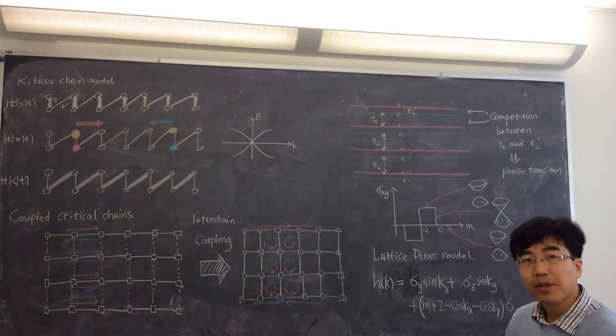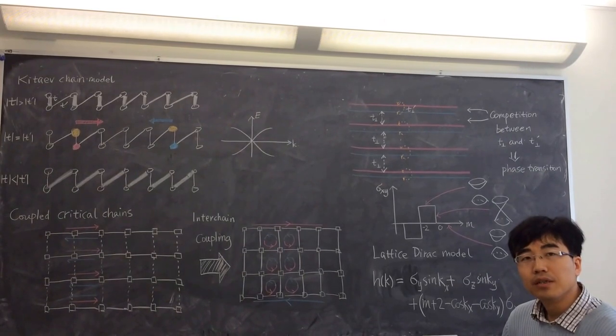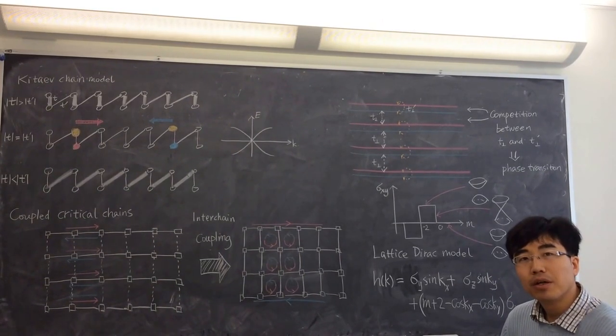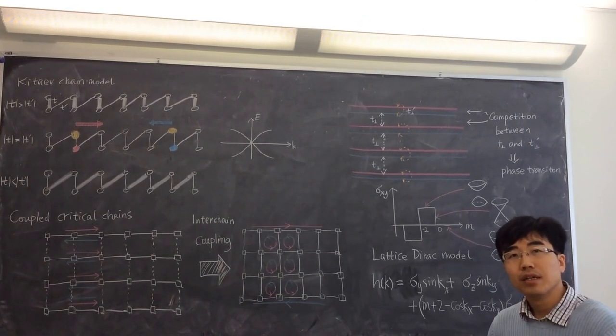So in summary, what we see is that when you have a lower dimensional topological state, when you drive it to a critical point, then you get a massless state.